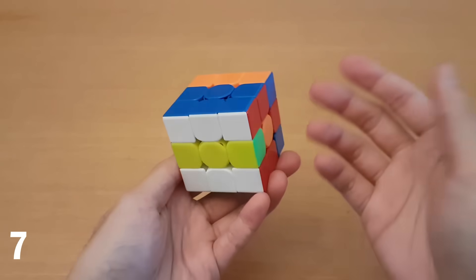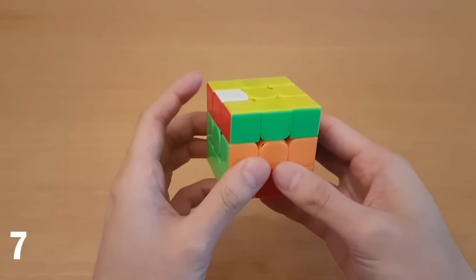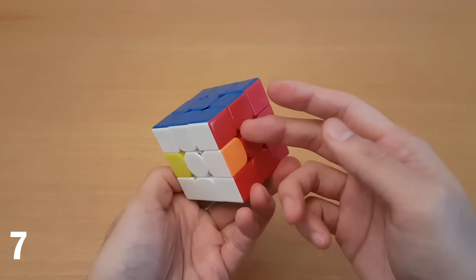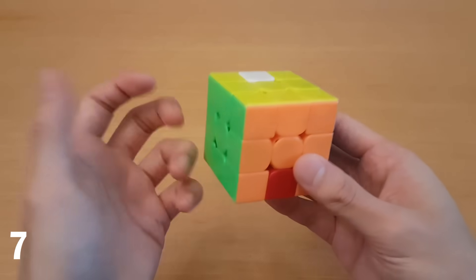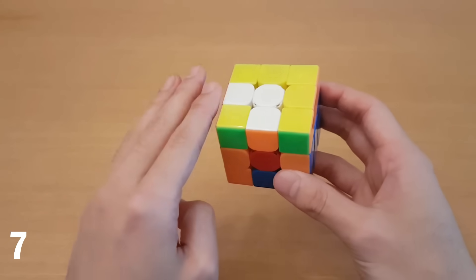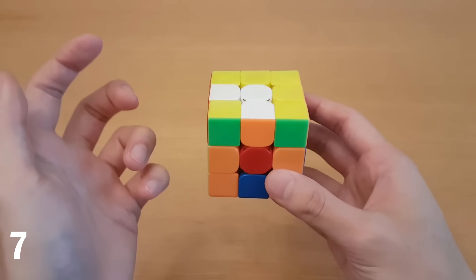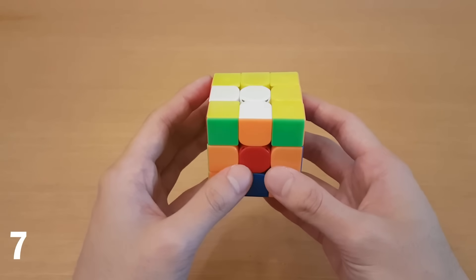Number seven, predicting last four edges. So as you do what's most likely going to be an M2 to solve your left and right edges, usually people end up pausing here to take a look at what their edge case is, which is not what you should do. Instead, from the top, you should be able to look at it and instantly know what your next few moves are going to be after you do the M2.